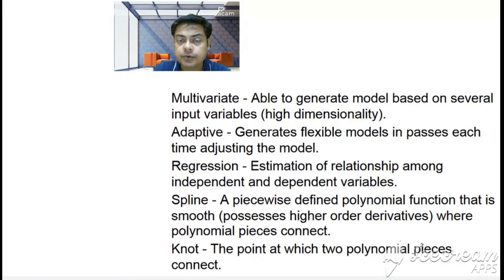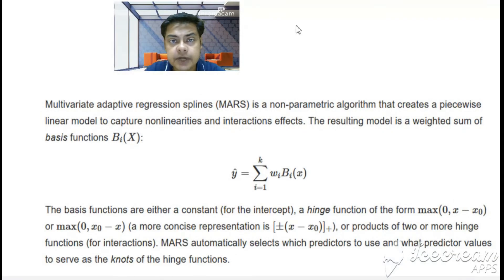Now how Multiple Adaptive Regression Splines or MARS works. MARS is a non-parametric algorithm that creates a piecewise linear model to capture the non-linearities and interaction effects. The resulting model is a weighted sum of basis functions. It's not taking directly x1, x2, x3, x4 as I showed you. It's taking between 0 to x minus a and 0 to a minus x—between that range it takes. That's why it's called a basis function rather than the x variable.